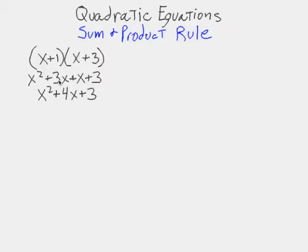Now, note that this number ended up being the sum of these two. And this number ended up being the product of these two. And that's going to happen every time when you have factors of quadratic equations that have whole roots.